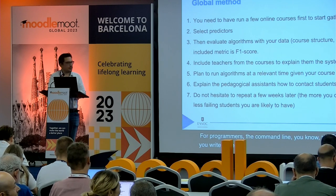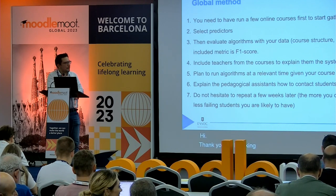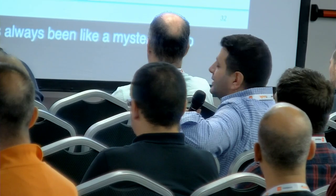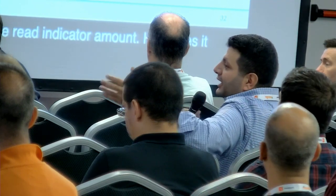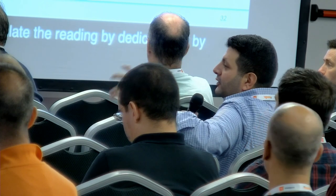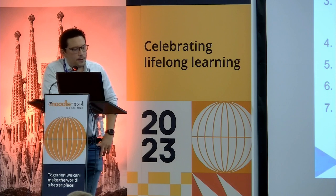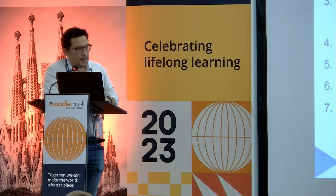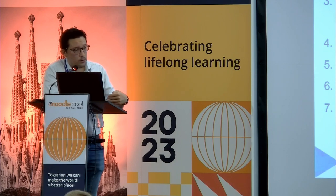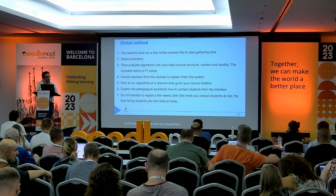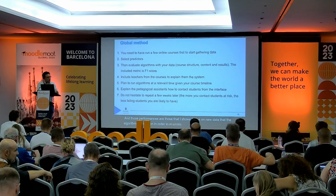Question: Thank you for breaking this down — it's always been a mystery box to me. What I wanted to ask about is the read indicator amount: how does it actually predict or calculate? Does it calculate reading by time dedication, or by logs within the course itself? Answer: It's a machine learning algorithm, so it takes many variables as vector inputs, and then applies a function that tries to minimize its error — it iterates many times until it is well calibrated, meaning the error is as low as possible. Then you run this function on new data and observe the performance metrics I showed, evaluated on data the algorithm has not seen.